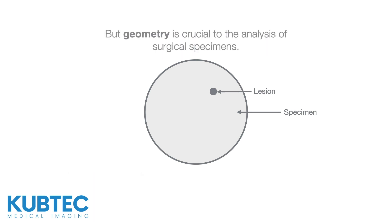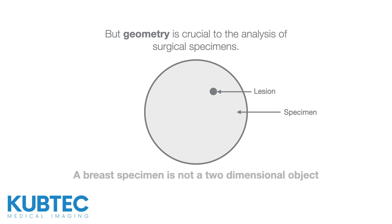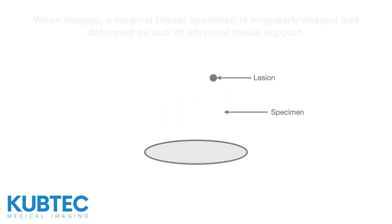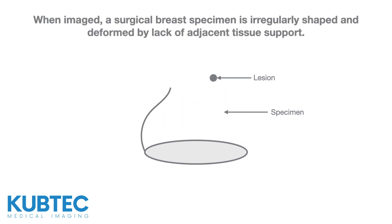But geometry is crucial to the analysis of surgical specimens, because a breast specimen is not a two-dimensional object. When imaged, a surgical breast specimen is irregularly shaped and deformed by lack of adjacent tissue support.